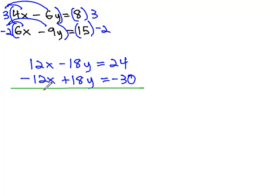You may notice that when we add these equations together, a very similar thing happens. The x's subtract out to 0, the y's subtract out to 0, and we have nothing, 0, no x's and no y's remaining on the left side. On the right side, 24 minus 30 is negative 6.